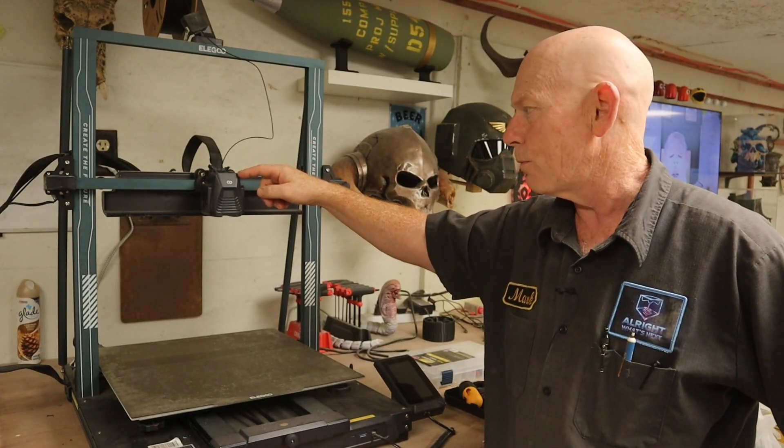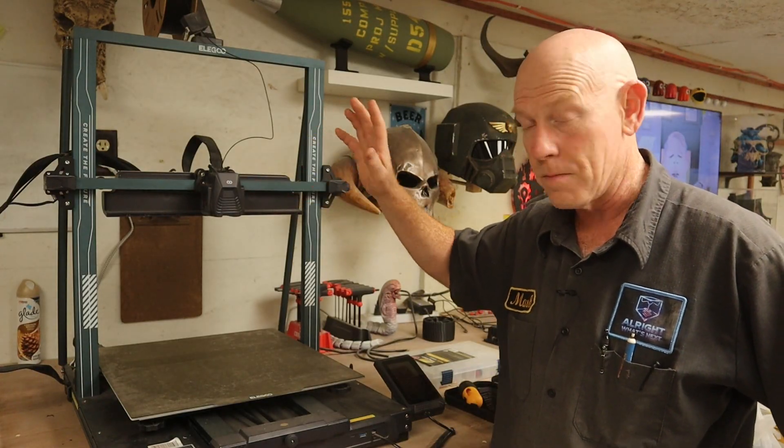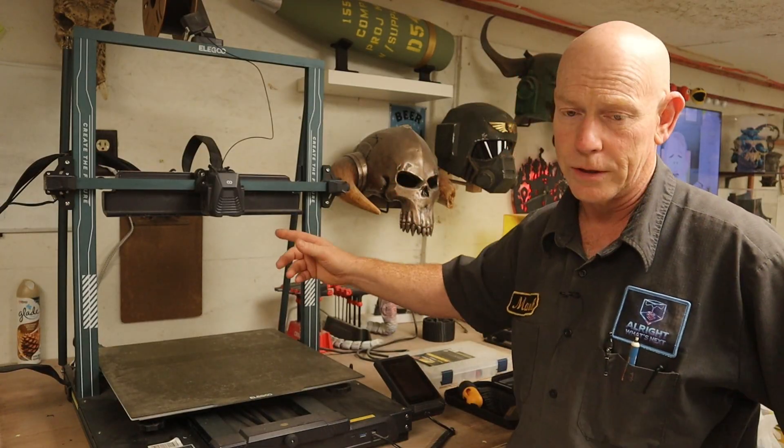I want to drop back to the 0.4 millimeter nozzle because I'm going to try and print a helmet with minimal layer lines, dropping it back down to a 1.2 layer height. So I've got to switch this out.